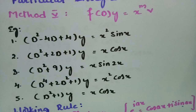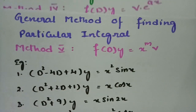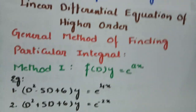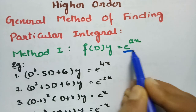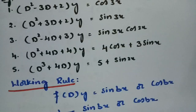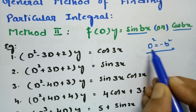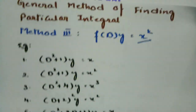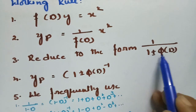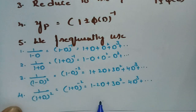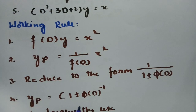Let me summarize all the working rules. Method 1 — single e^(ax): put D = a. Method 2 — sin(bx) or cos(bx): replace D² with −b². Method 3 — algebraic function: write in the form (1 + φ(D)) and raise to the numerator, then expand using series expansions. These expansions are easy to understand and practice.